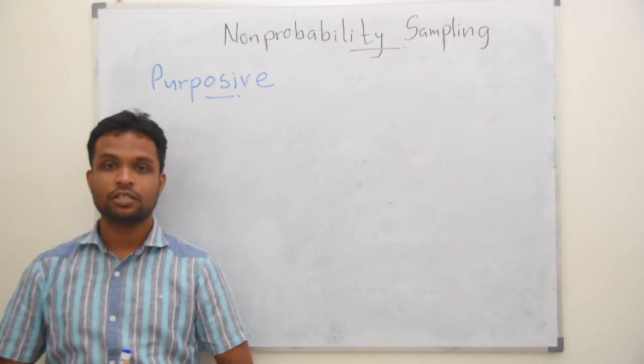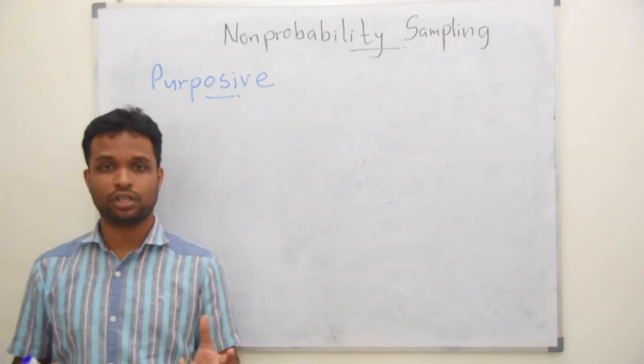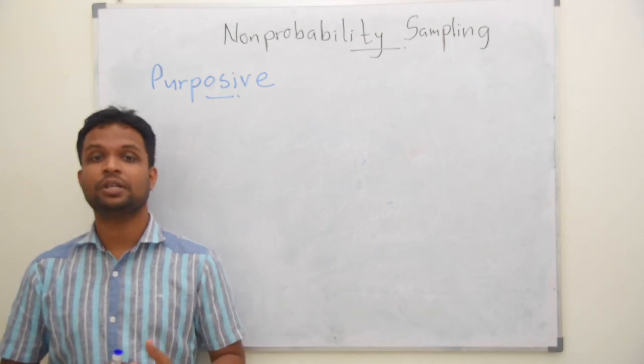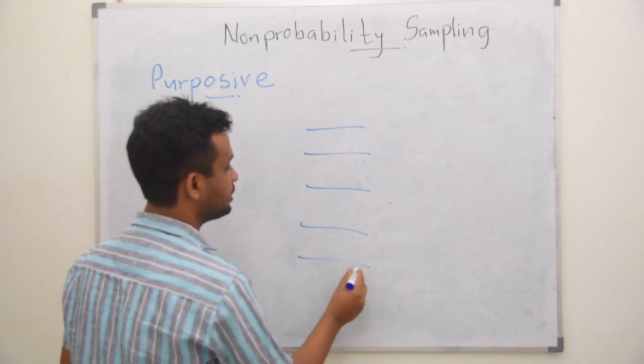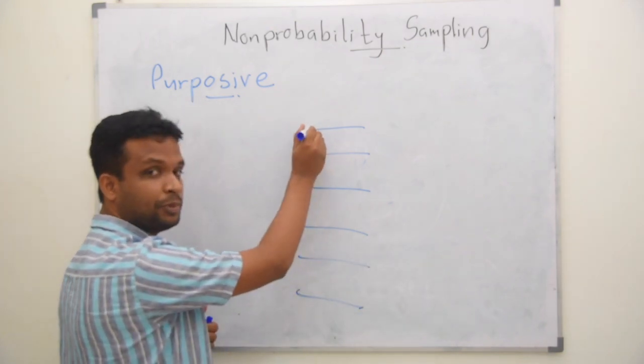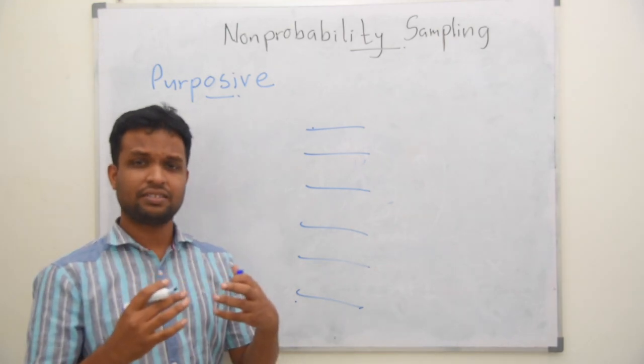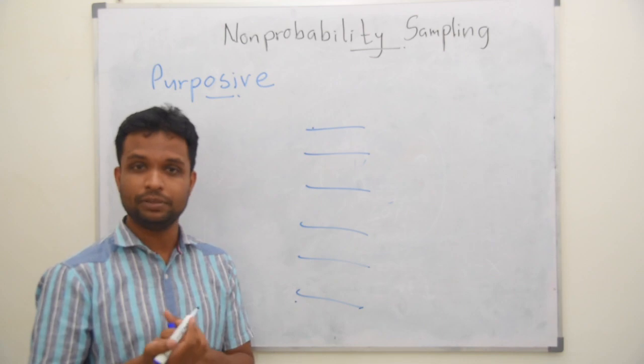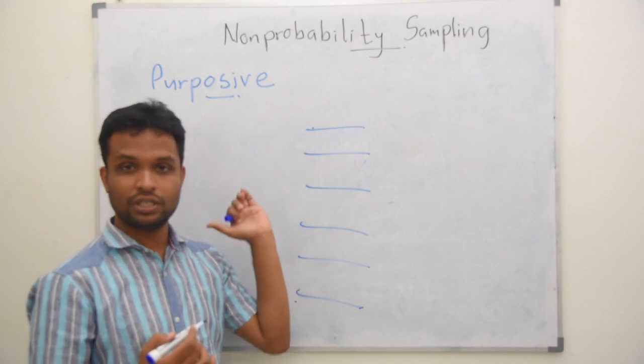Another example is, you need to study about the thinking process of the students who are really good in mathematics. In a class, generally, we have students at different levels. They are good in mathematics, they are weak in mathematics. As mathematics needs an intellectual involvement for solving problems, you are interested in finding out the thinking process of the key process of good students.